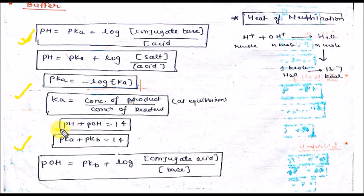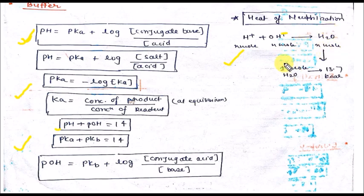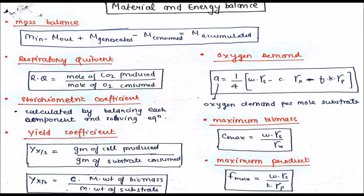If you know the pH you can calculate the pOH from this formula. For heat of neutralization: H⁺ and OH⁻ form H₂O, and the heat of neutralization for one mole of H₂O formation is 13.7 kilocalories.